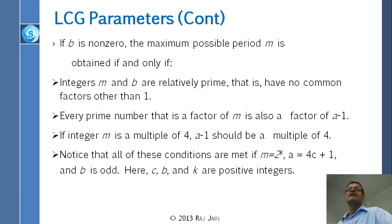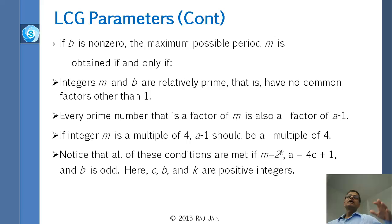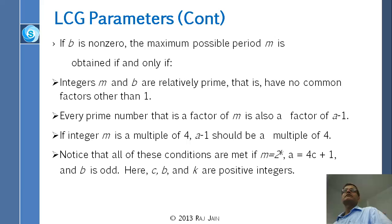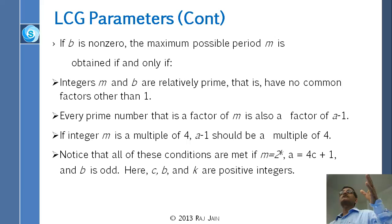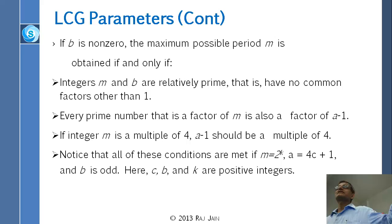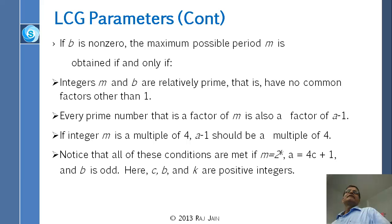Not all full-period generators are equally good. The conditions we discussed are only for the period, not for independence. The conditions are necessary and sufficient for maximum period, but they don't guarantee statistical quality. To find correlation, you compute (Xn - mean)(Xn-1 - mean) summed up — that gives you correlation between successive numbers. You can also find the correlation between Xn and Xn-2, or Xn and Xn-3. You must do lots of analysis to determine whether a generator is good or not.